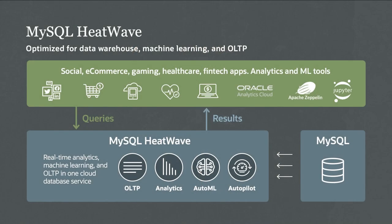MySQL HeatWave is built using something we call Autopilot. Autopilot is machine learning-driven automation. It automatically tunes and scales MySQL HeatWave, and it's fundamentally what allows MySQL HeatWave to be so fast.